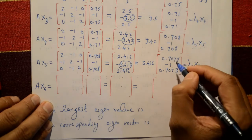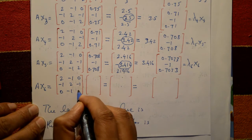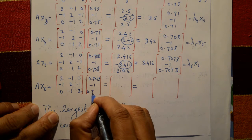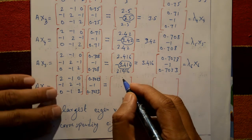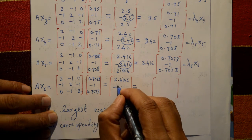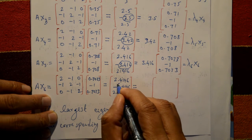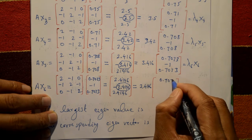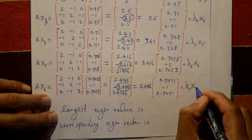Seventh iteration: A × x6 with x6 = [0.7073, -1, 0.7073]ᵀ. Matrix multiplication gives first row 2.4146, second row -3.4146, third row 2.4146. The numerically largest element is 3.4146; take it as common factor, giving λ₇ = 3.4146 and x7 = [0.7071, -1, 0.7071].